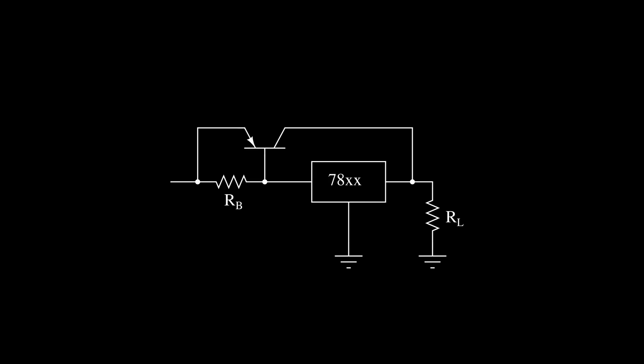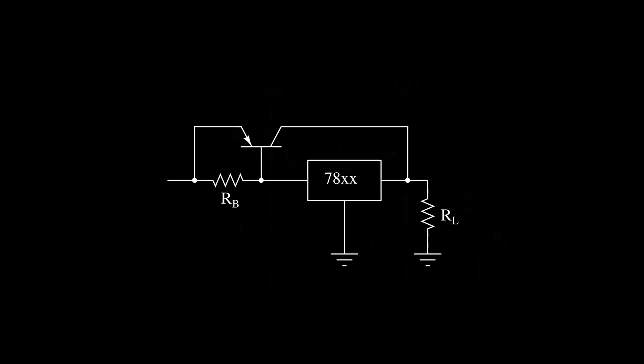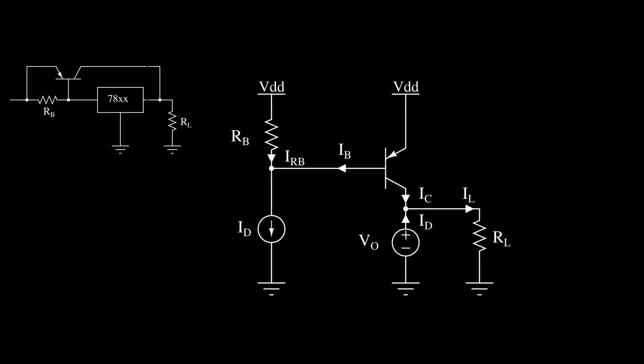In the last video we developed a model for this simple current boosting circuit for linear regulators such as the 78xx family. We found that there exists an output current value I tilde equal to the base-emitter junction drop divided by the resistor Rb, after which the transistor starts to conduct.